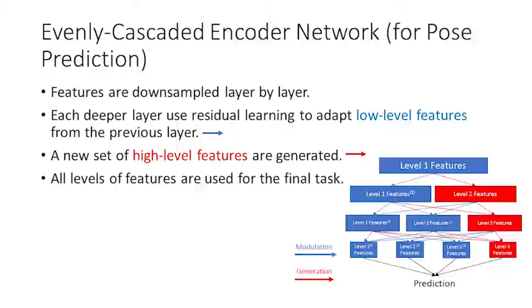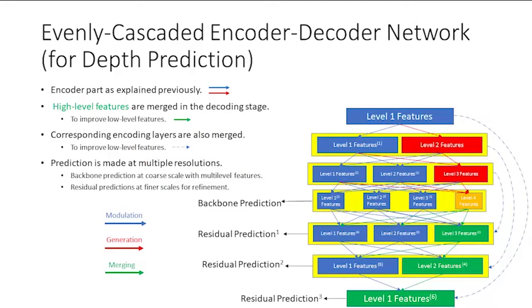For depth prediction, higher-level features are gradually merged into lower-level ones, and the encoding layers are merged into the decoding layers via skip links. Predictions are made at multiple resolutions.